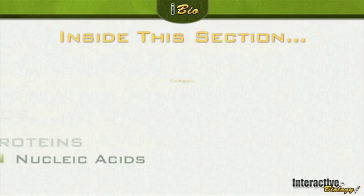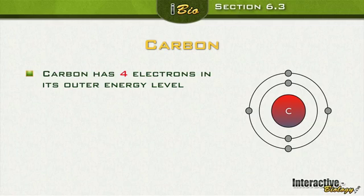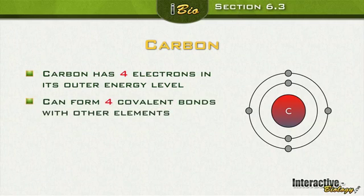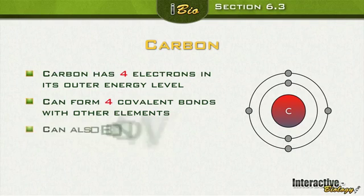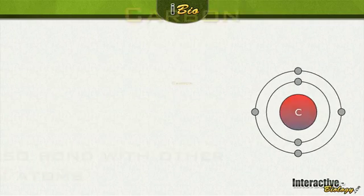Let's talk about carbon. Carbon has two electrons in its first energy level and four in the second energy level. It would like to have eight in that second level, so it has room for four more. That means carbon can form four covalent bonds with other elements, and it can also bond with other carbon atoms.